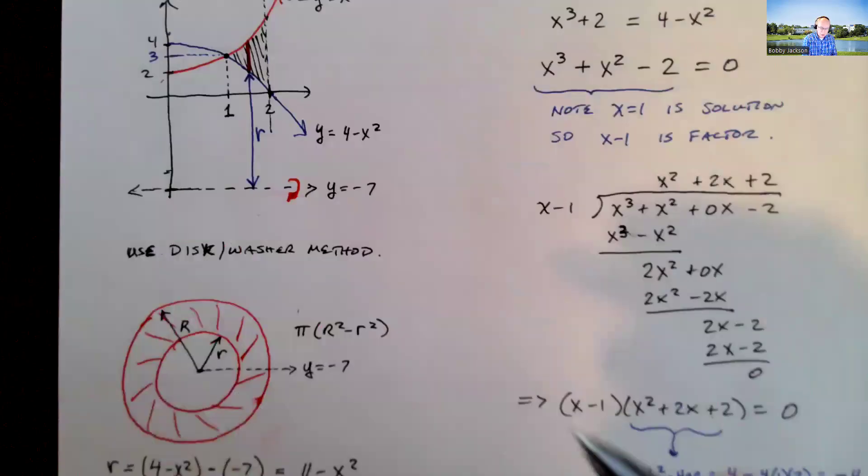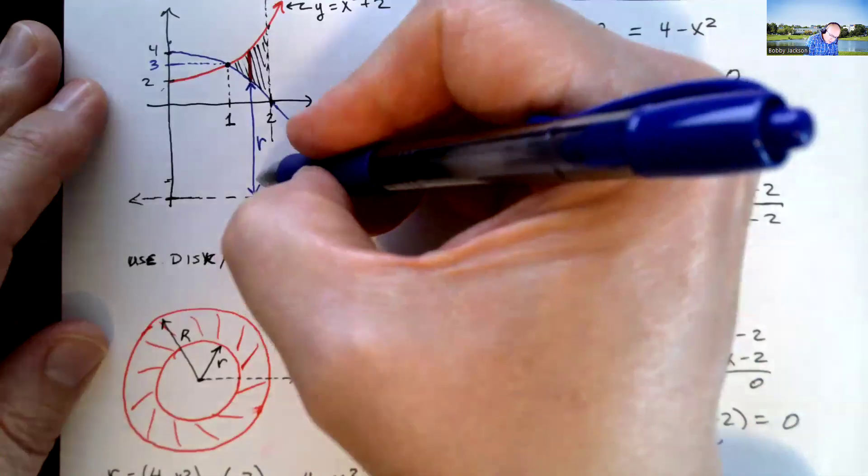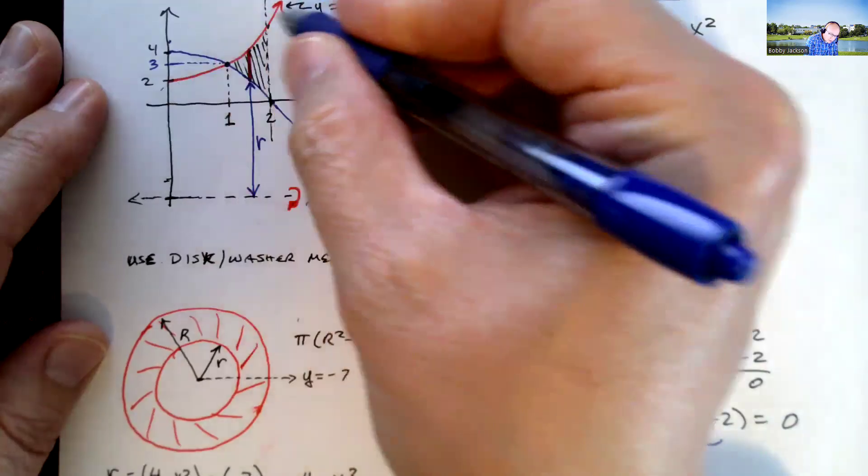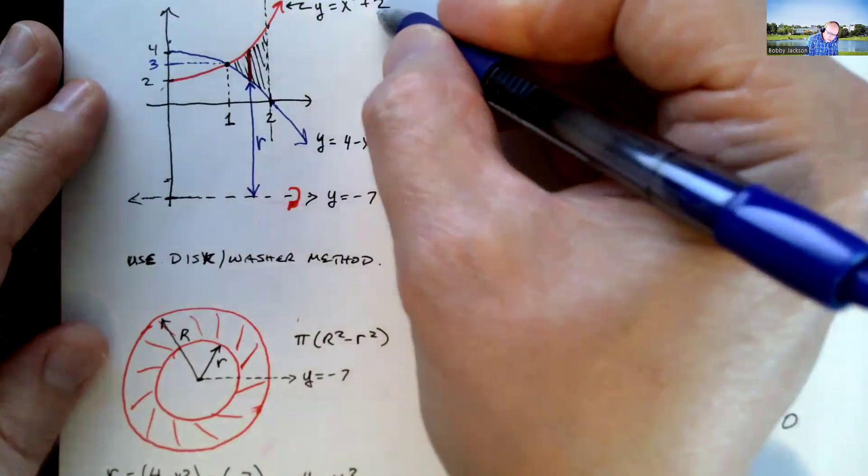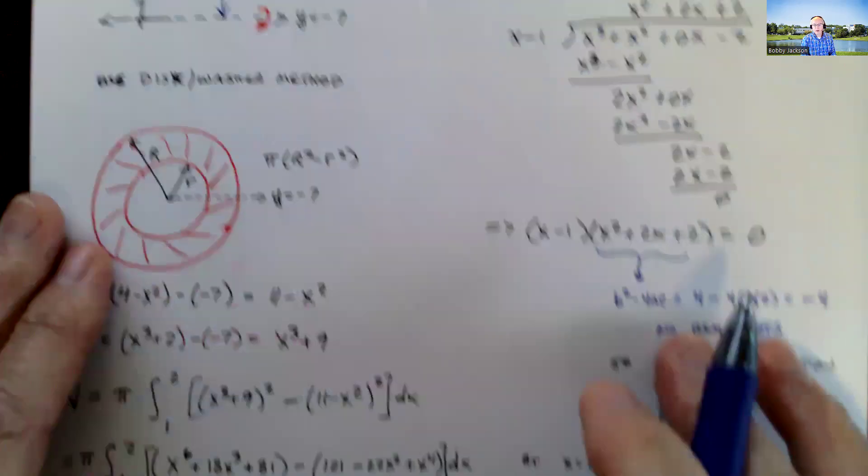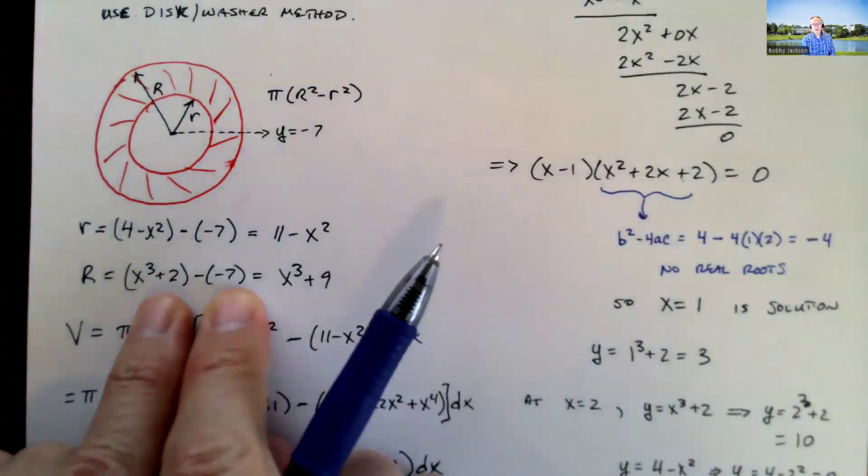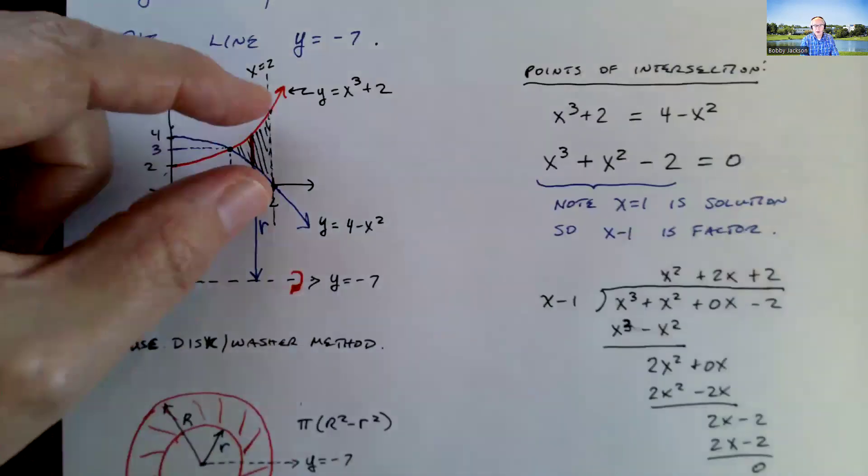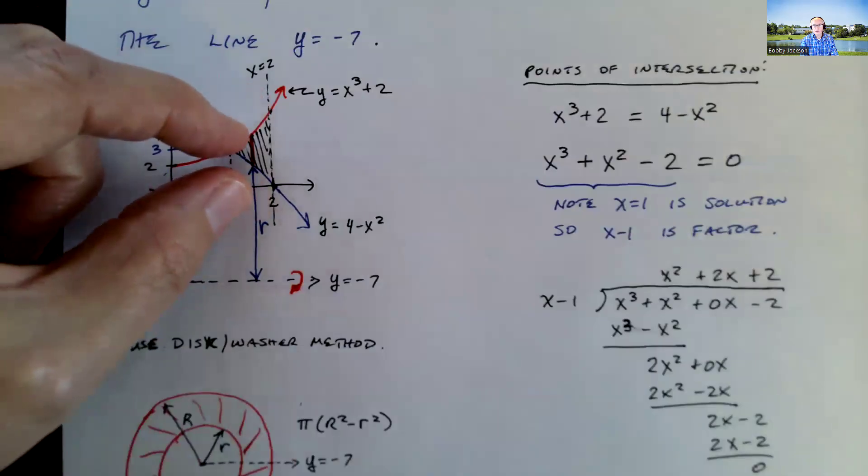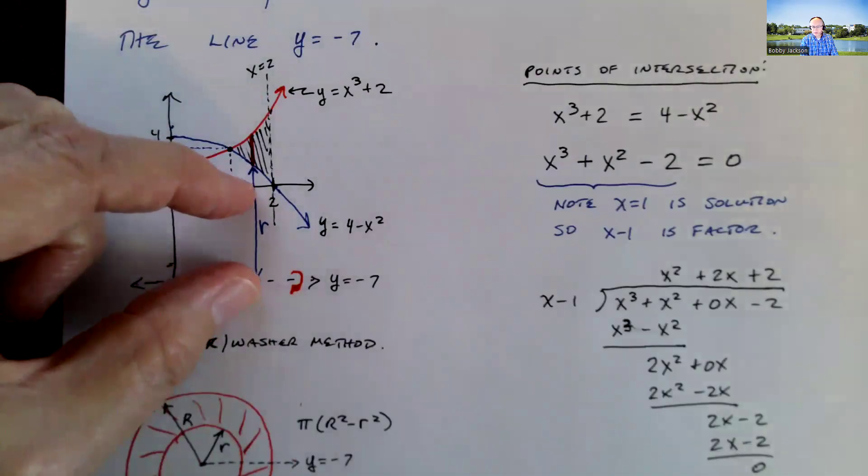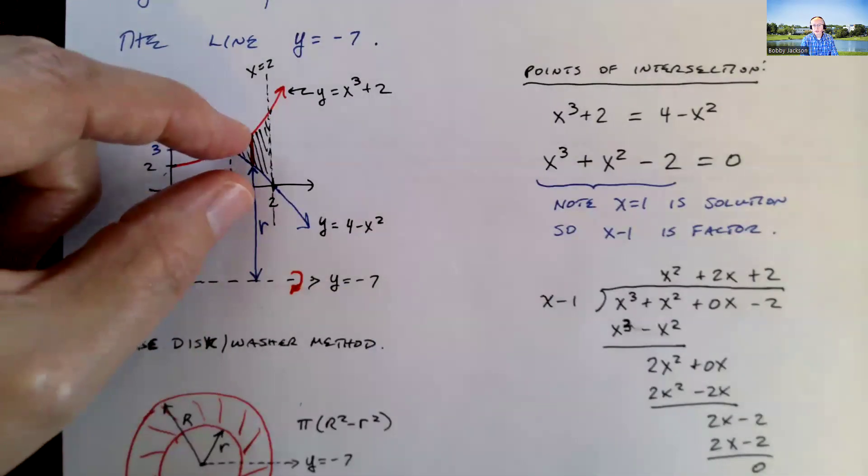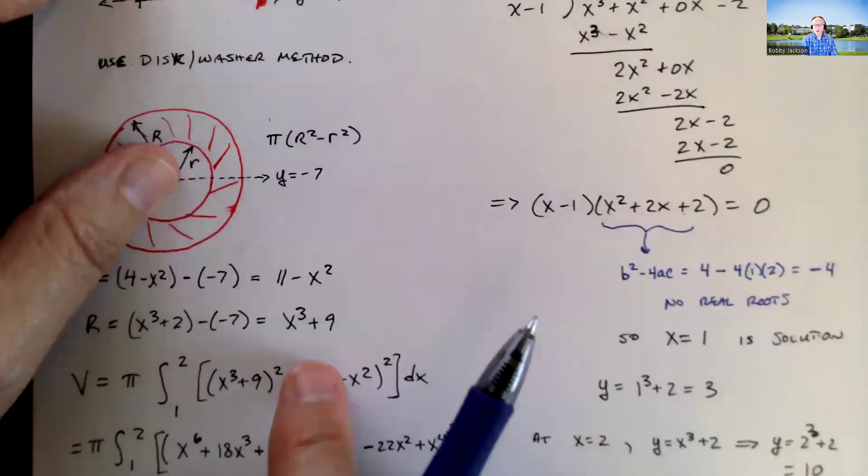The big r is going to be from our axis of rotation all the way to the top of the rectangle, which is on this curve, x cubed plus 2. So it's x cubed plus 2 minus a negative 7. x cubed plus 2 minus a negative 7 gives us x cubed plus 9. Or again, another way of thinking about it, the distance from between my fingers here is x cubed plus 2. The distance here is 7, from 0 to negative 7 is 7. So 7 plus x cubed plus 2 gives me x cubed plus 9.